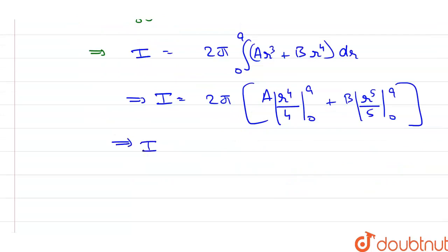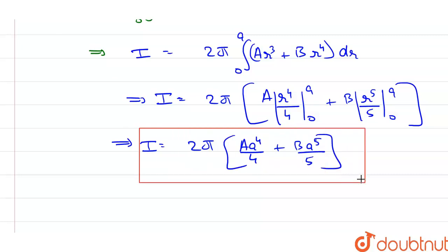This implies I is equal to 2π into [A a⁴/4 plus B a⁵/5]. This is the moment of inertia.